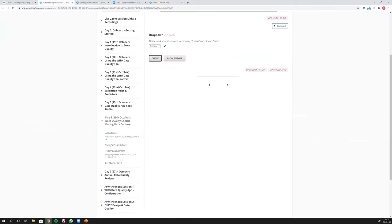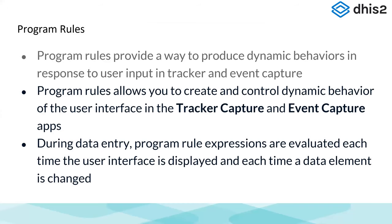All those different data quality checks you just saw are done via program rules in DHIS2. So essentially, what is a program rule? A program rule allows you to put in dynamic behaviors in response to user input. Just as you saw, I was ticking boxes and more fields were appearing, or I was putting in values and it was causing alerts and error warnings — that's the kind of dynamic behaviors we're talking about.